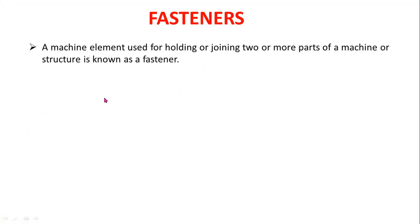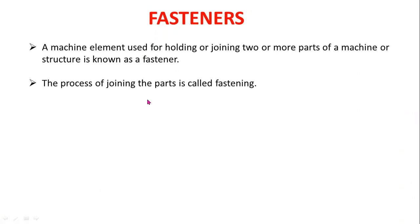A machine element used for holding or joining two or more parts of a machine or structure is known as a fastener. The process of joining the parts is called fastening.